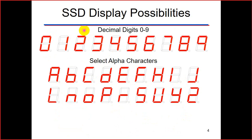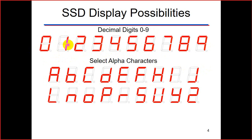We can display digits zero to nine — zero, one, two, three, four, five, six, seven, eight, nine — and also various alpha characters. The important point to note is that some segments are active or on, and some segments are off. Red color means they are on, white color means they are off, and this combination makes different digits or alpha characters.